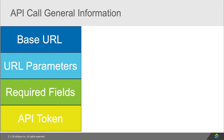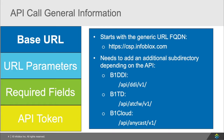Now let's talk about some of the cloud platform's general REST API information. The API starts with a basic generic URL FQDN with HTTPS: csp.infoblox.com. Then additionally, you'll need to add a subdirectory depending on the call you're trying to make. For BloxOne DDI, that is /api/ddi/v1. For BloxOne Threat Defense, that is /api/atcfw/v1. And for BloxOne Cloud, that is /api/anycast/v1. Now these may change in the future, so be sure to check the documentation when you start using Infoblox's REST API.